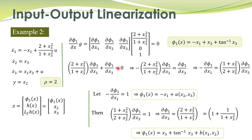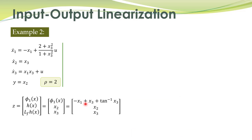The only difficulty in obtaining input-output linearization is solving these partial differential equations; otherwise the approach is quite systematic. Once we have phi_1(x), that gives the state transformation. We check whether it is a diffeomorphism by verifying that the inverse transformation exists and both the transformation and its inverse are smooth.